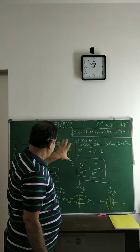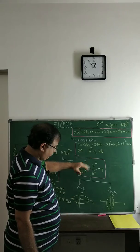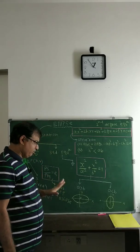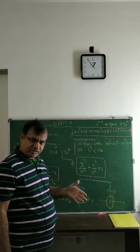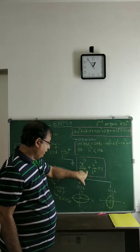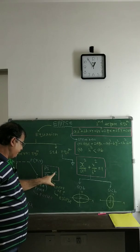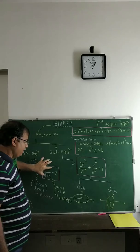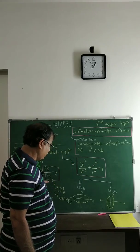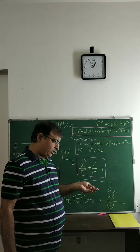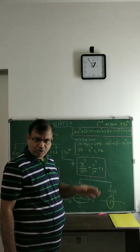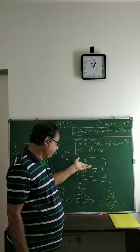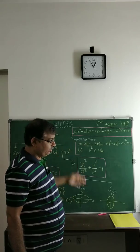In the next class, a specific equation of an ellipse will be given and we will calculate all the properties related to it. There are two varieties of questions: one where properties such as a, b, eccentricity, or a fixed point are given and we have to write the equation of the ellipse; and another where the equation of the ellipse is given and we have to calculate all its characteristics — major axis, minor axis, and many other things.